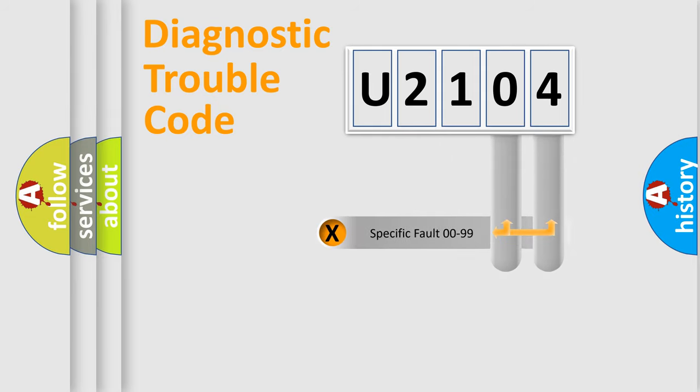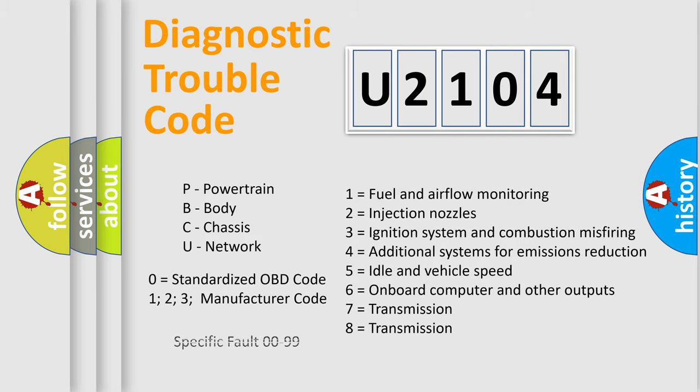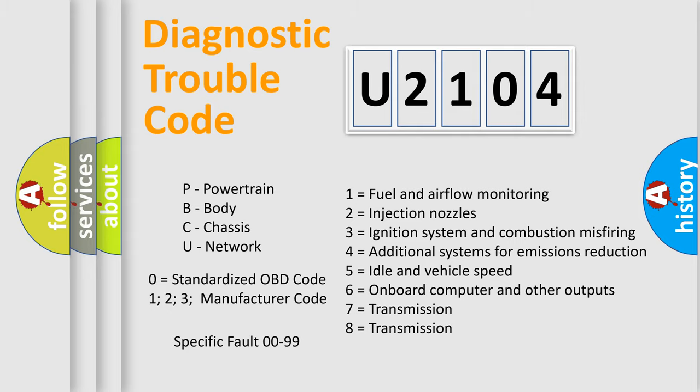The distribution shown is valid only for the standardized DTC code. Only the last two characters define the specific fault of the group. Let's not forget that such a division is valid only if the second character code is expressed by the number zero.